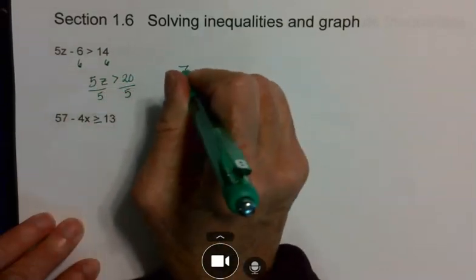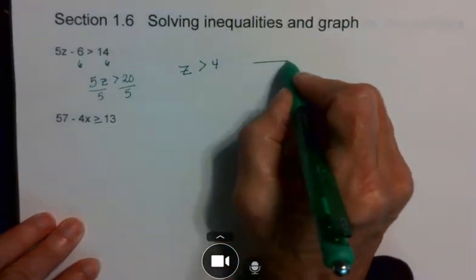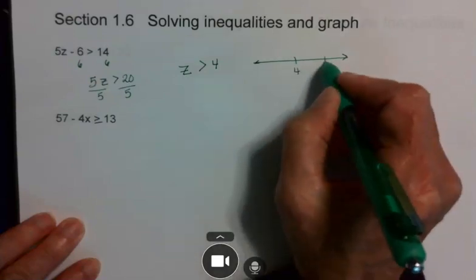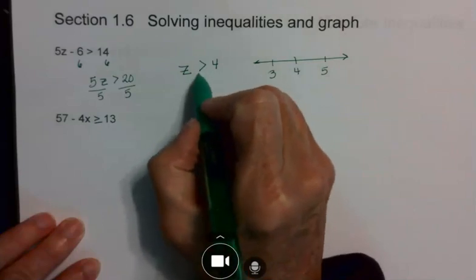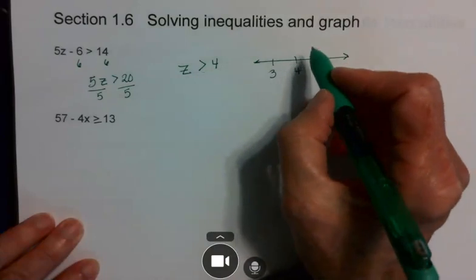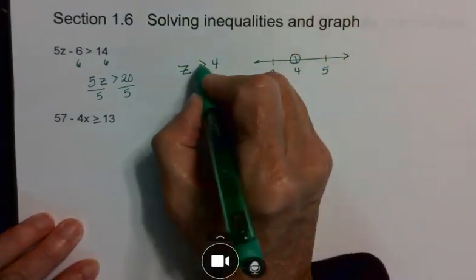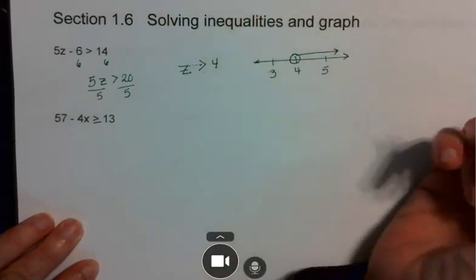I'm going to divide by 5, and I'm going to get z is greater than 4. When I put this on a number line, I put 4 in the center, with 3 and 5 on both sides. It does not have a line underneath, so it's just greater than. It doesn't include the 4, so I put a circle on the 4 and shade in the direction of the arrow.